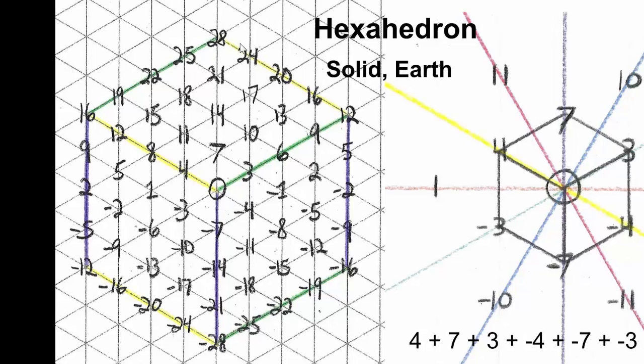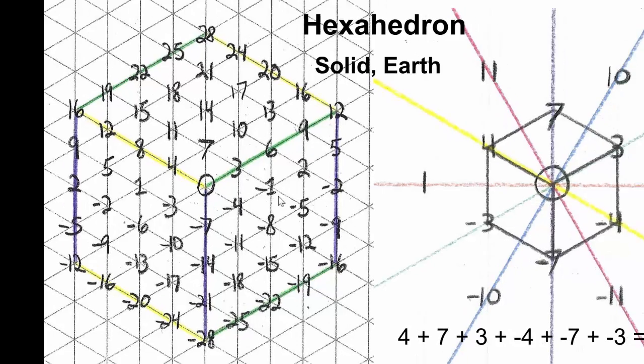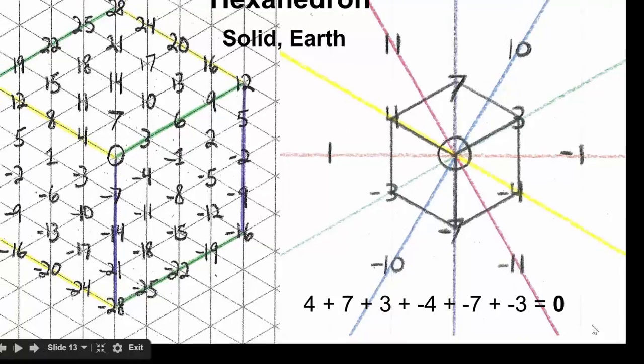The hexahedron counts by threes, fours, and sevens. And when reduced, also creates an equation that equals zero.